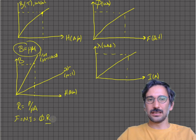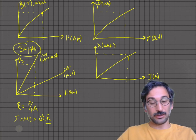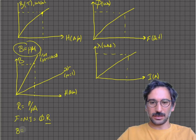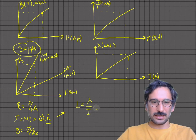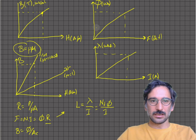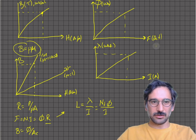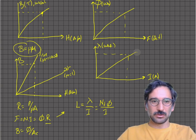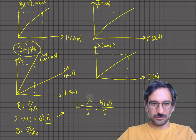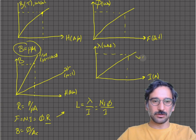B is flux divided by cross-sectional area of the core. Inductance is flux linkage per current, and flux linkage equals number of turns times flux. On the flux-linkage versus current graph, the slope gives inductance L = λ/i. The area under the B-H curve gives energy density in joules per meter cubed, and the area under the flux-linkage versus current curve gives energy in joules.